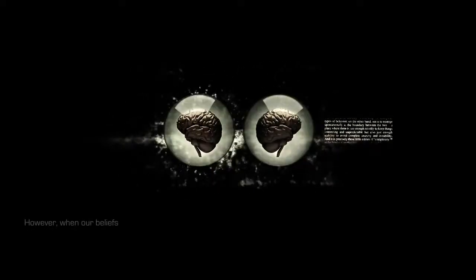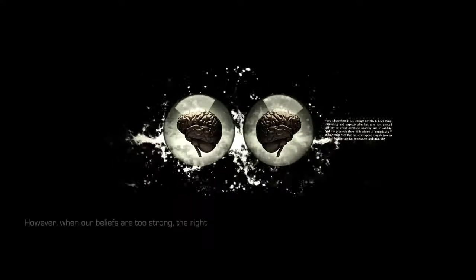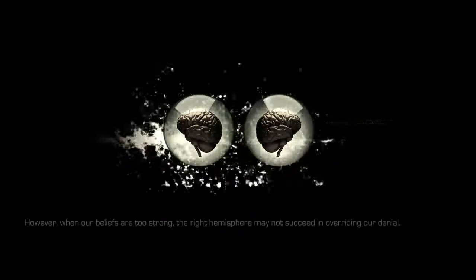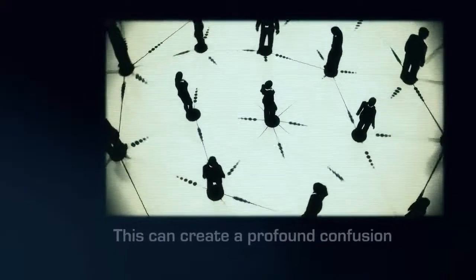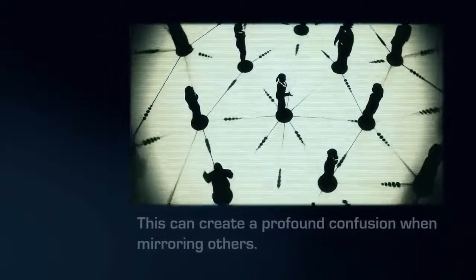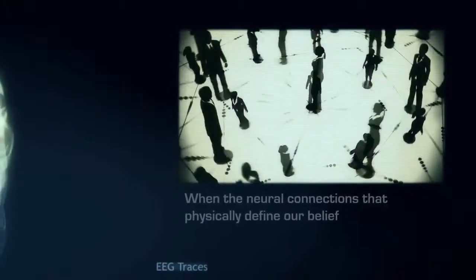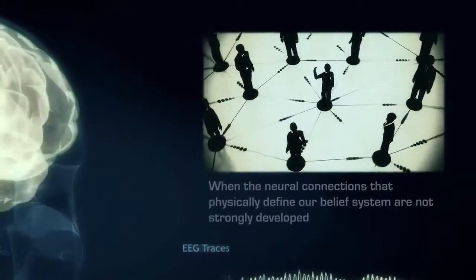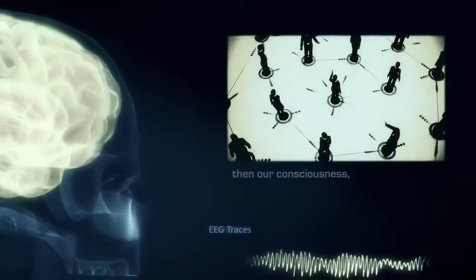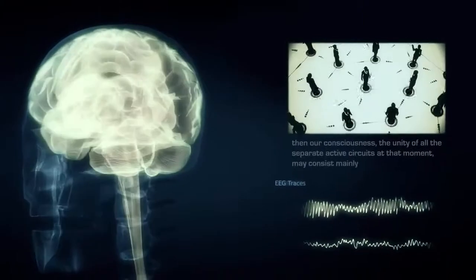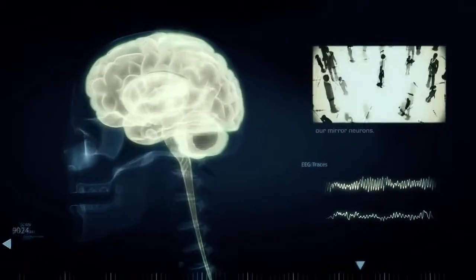However, when our beliefs are too strong, the right hemisphere may not succeed in overriding our denial. This can create a profound confusion when mirroring others. When the neural connections that physically define our belief system are not strongly developed or active, then our consciousness, the unity of all the separate active circuits at that moment, may consist mainly of activity related to our mirror neurons.